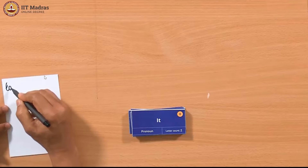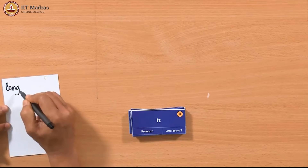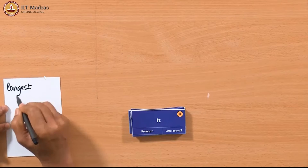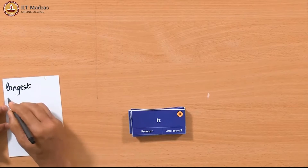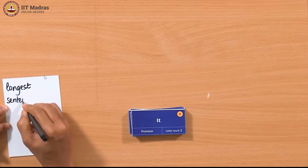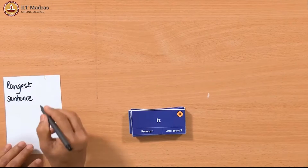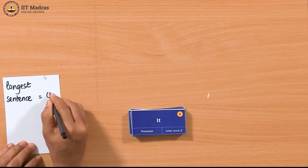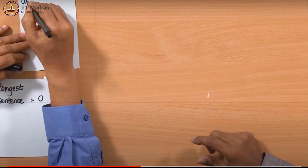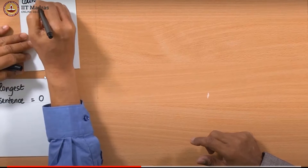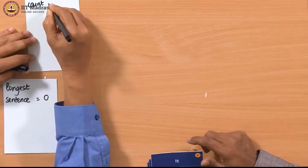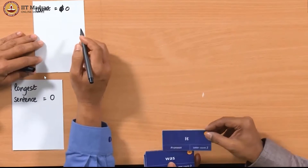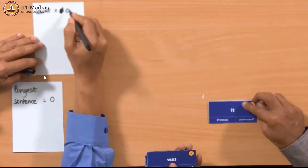In order to identify the longest sentence, they first maintained a variable called longest_sentence, which was initialized to 0. Additionally, they maintained another variable called count, which is also initialized to 0.